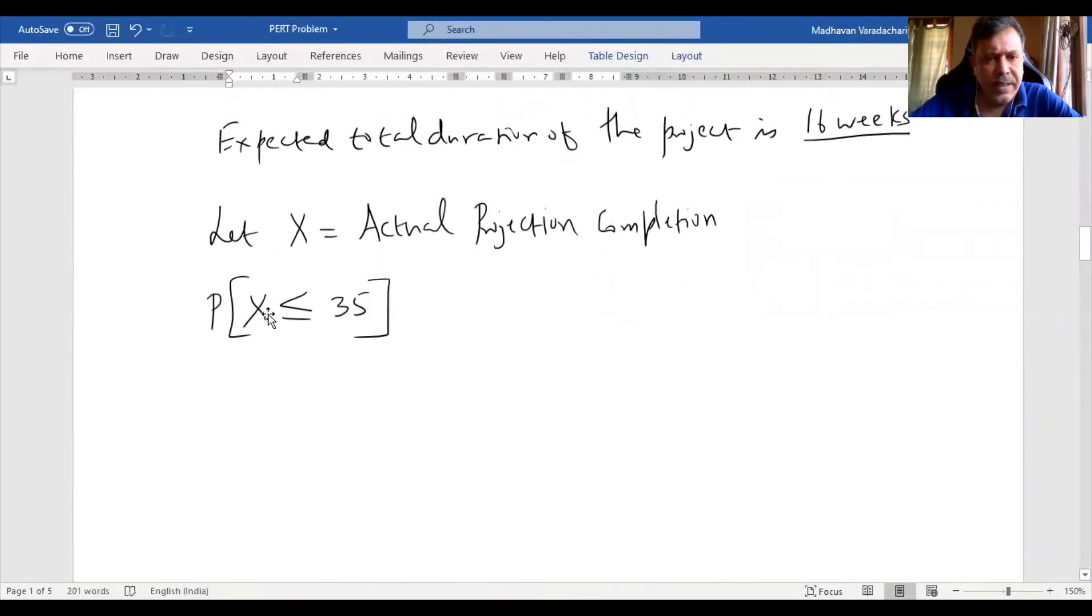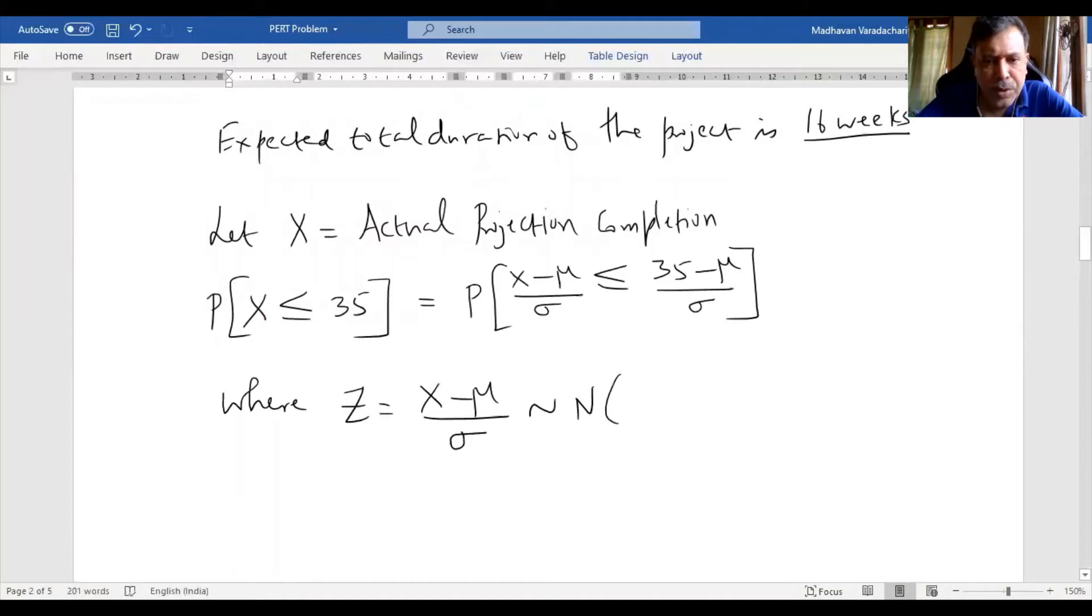Now we know this X is actually following a beta distribution. If I have to convert it into a standard normal distribution, we use the conversion factor where Z equals X minus μ by σ. If I subtract μ this side, I need to do the same thing on this side. If I divide by σ this side, I need to do the same thing on the other side of the inequality. Now this conversion, Z, is supposed to follow a standard normal distribution. So it is a normal distribution having a mean zero and variance one.